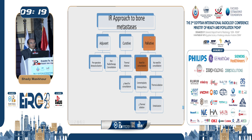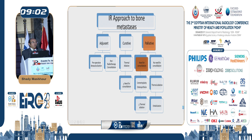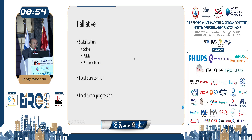For palliative control, we have two major arms. You need to score the patient — is he stable or unstable? If unstable, go for consolidation, either before or after thermal ablation. You must consider consolidation if the bone is in a weight-bearing area. If there is no need for consolidation — stable patient or non-weight-bearing area — you proceed with thermal ablation or embolization. The palliative approach involves stabilization of the spine, pelvis, and proximal femur, local pain control by ablation or cement injection, and control of local tumor progression to prevent compromise of major neural structures.